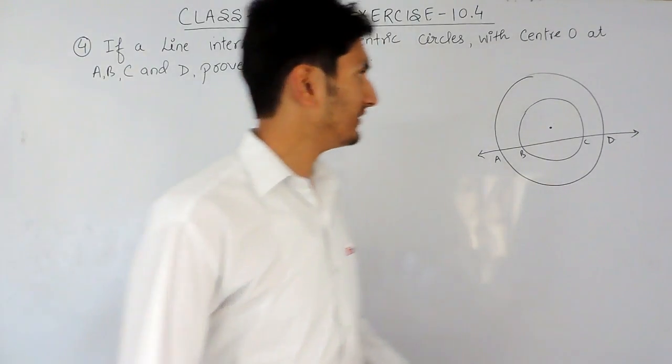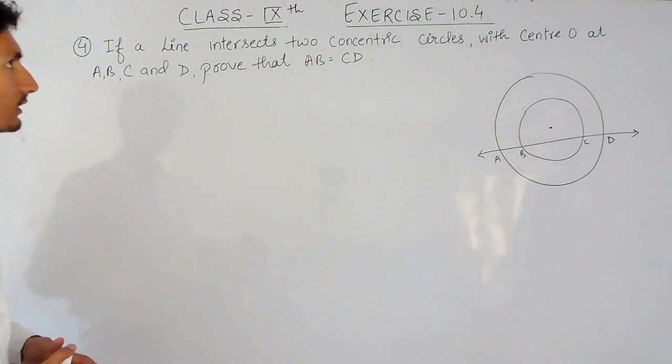Hello everyone, in this video we are going to solve fourth question of exercise 10.4. The question says, if a line intersects two concentric circles with center O at A, B, C and D, prove that AB is equal to CD.